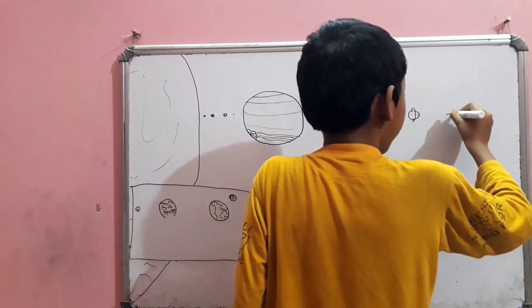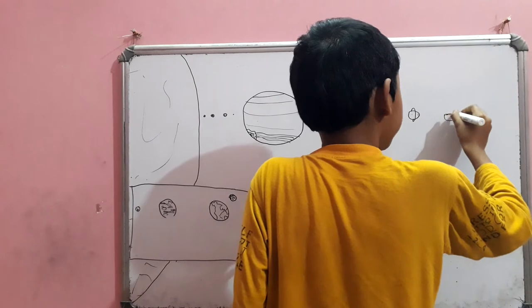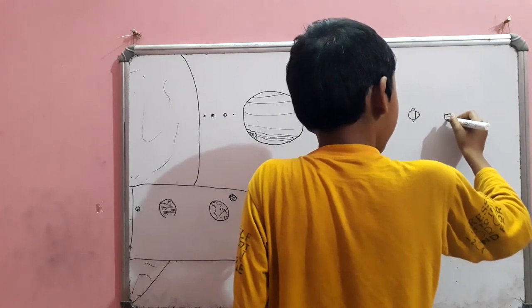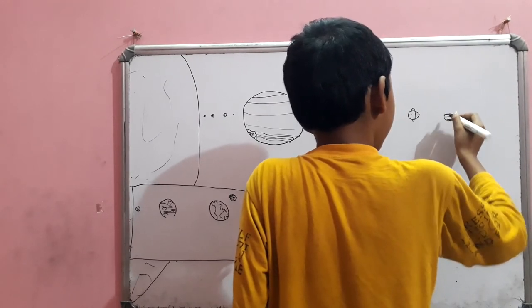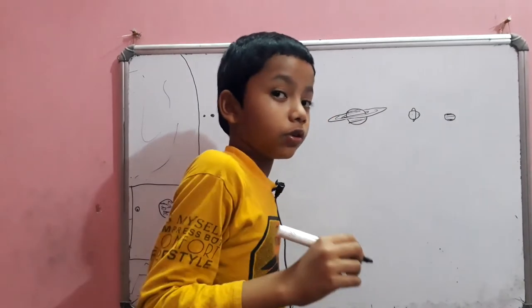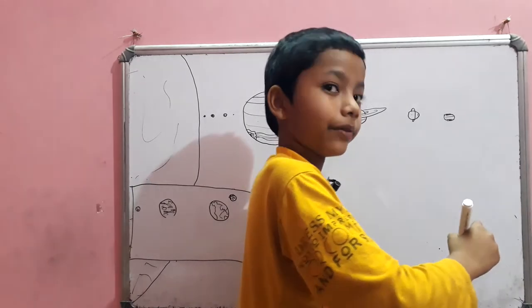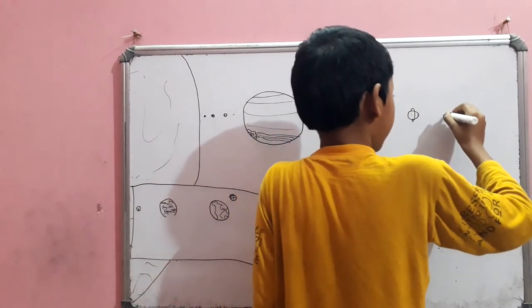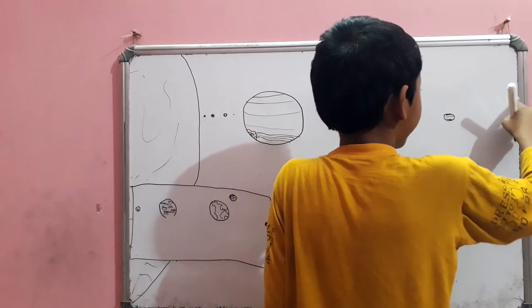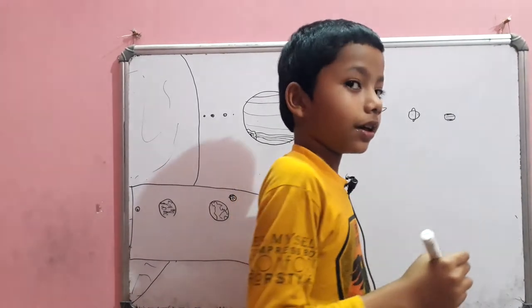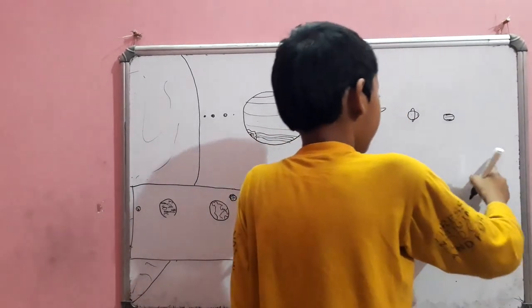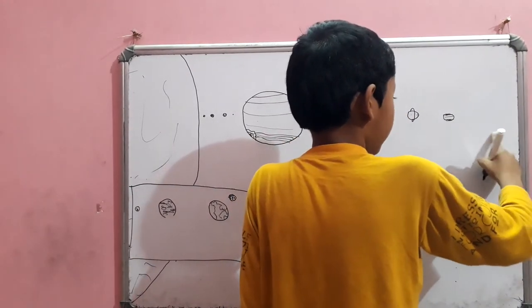Now, the last planet from the solar system. Neptune's turn. This is Neptune. It is the last planet from the solar system. Neptune has 14 moons, I guess. There's 14 moons in Neptune.